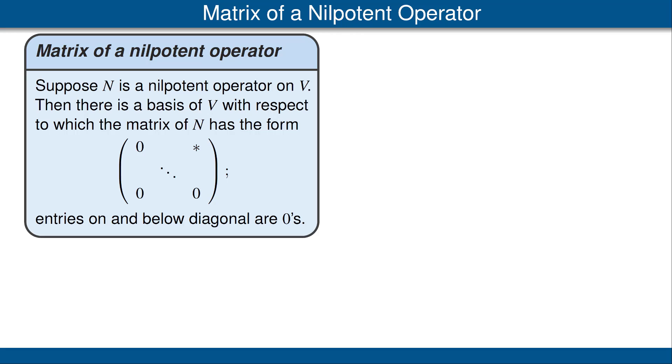Our next result states that if N is a nilpotent operator on V, then there's a basis of V with respect to which the matrix of N is an upper triangular matrix with zeros along the diagonal.